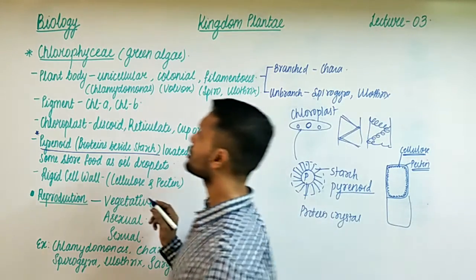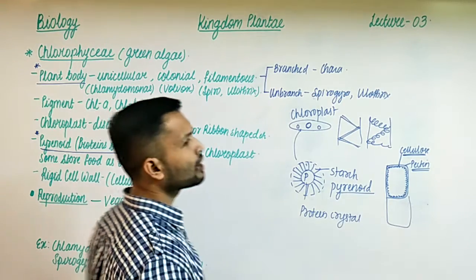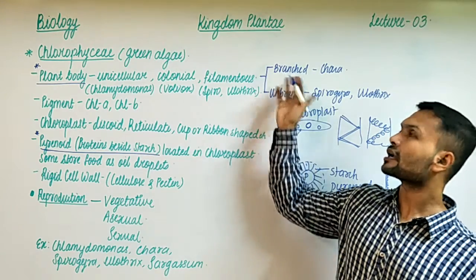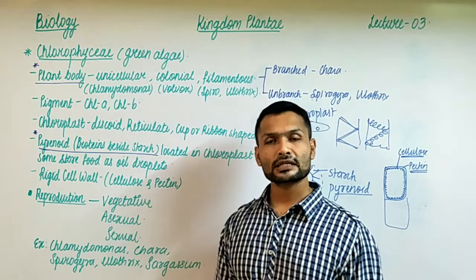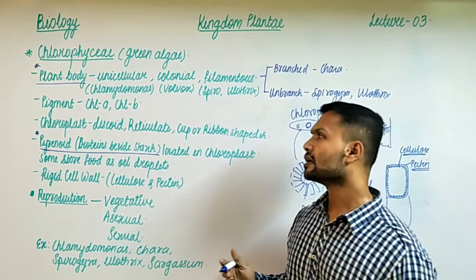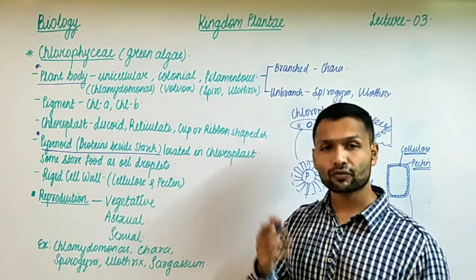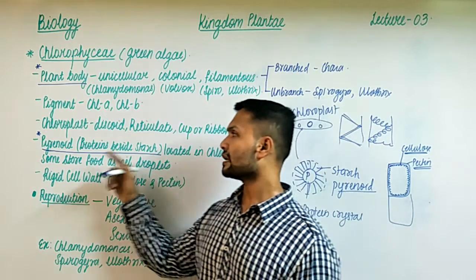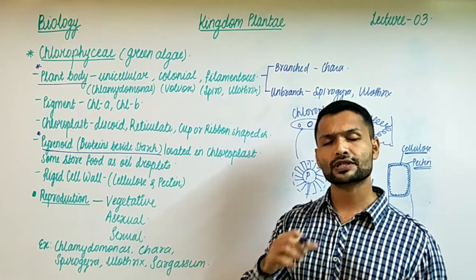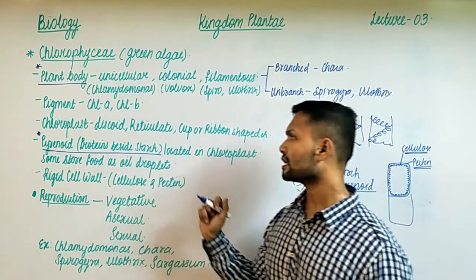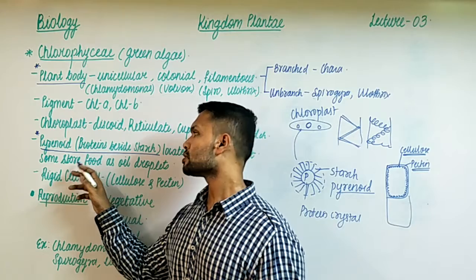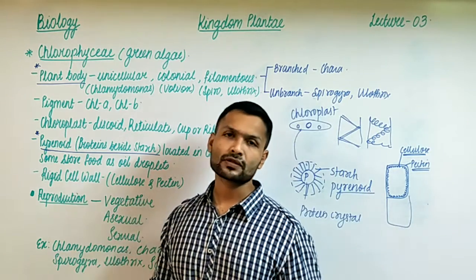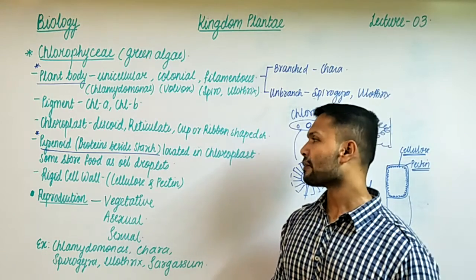Quick revision of important points: plant body can be unicellular, multicellular, colonial, or filamentous - both unbranched and branched. Pigments present are chlorophyll A and chlorophyll B. Chloroplast shapes include discoid, reticulate, ribbon. Food is stored in the form of pyrenoids - protein crystals coated with starch - present inside the chloroplast. Some also store food as oil droplets. The cell wall is made of cellulose and pectin.